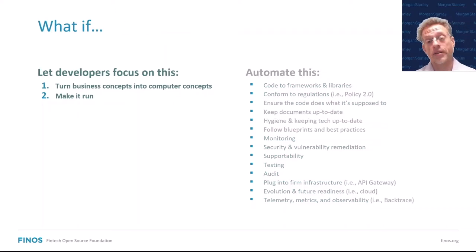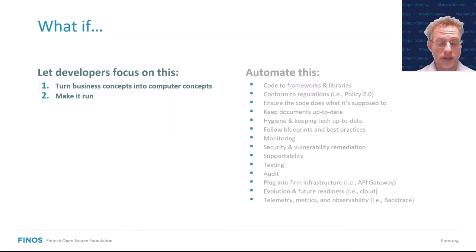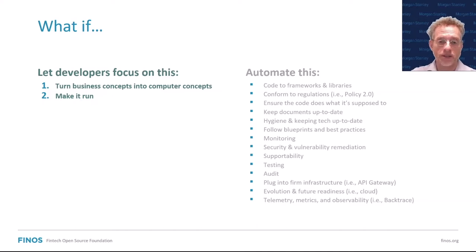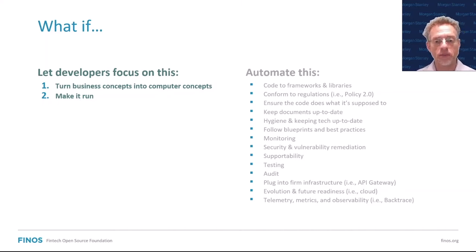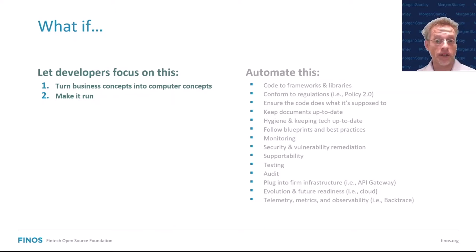So naturally you might think: what if we could go back to just concentrating on what's important — turning business concepts into computer concepts — and do something else with all these other things? We can't make them disappear because they're important and they need to be done. There are a couple of ways you can deal with it: you can try to put it all behind frameworks, or — and this is what we try to do — you can automate a lot of that. And that's where Morpher comes in.